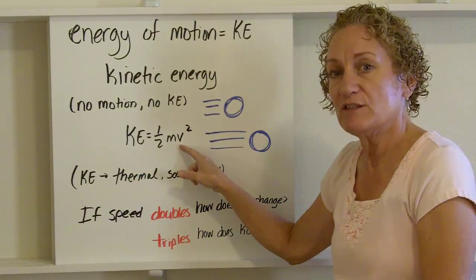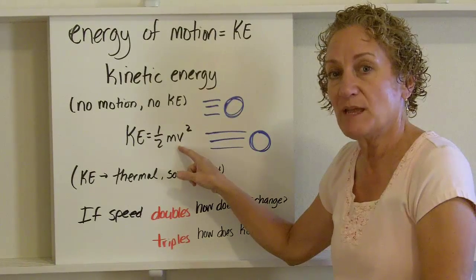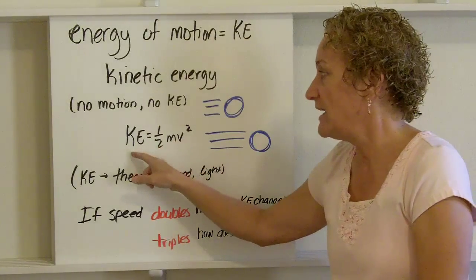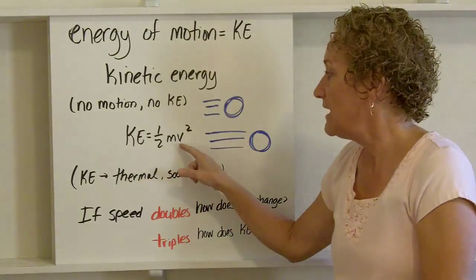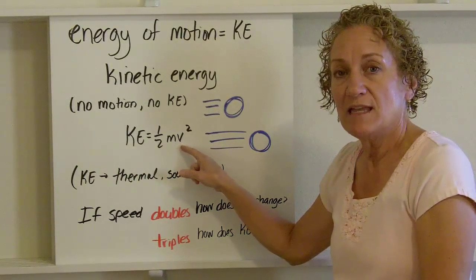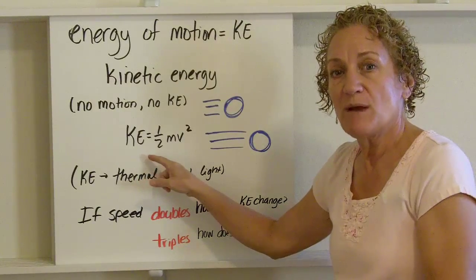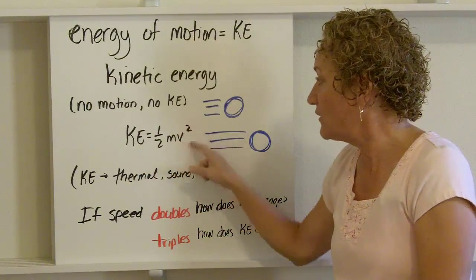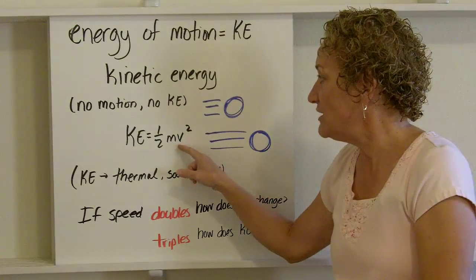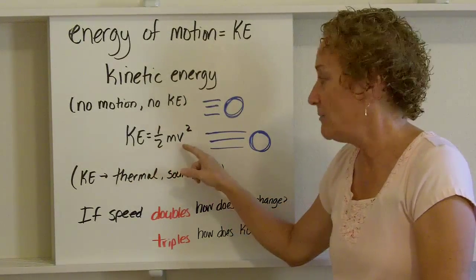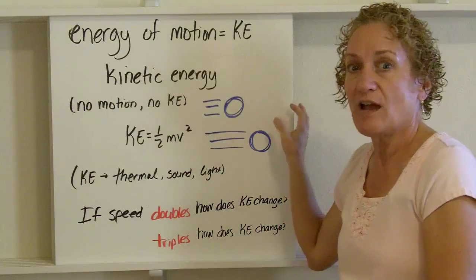If this is tripled, this changes to 3 times as big. 3 squared is 9, that's 9 times as big. If this is 10 times as big, 10 squared is 100. Kinetic energy is 100 times as big. So I just want you to remember that this is a square function. So as this changes, this also changes, but you have to square this number to figure out how much.